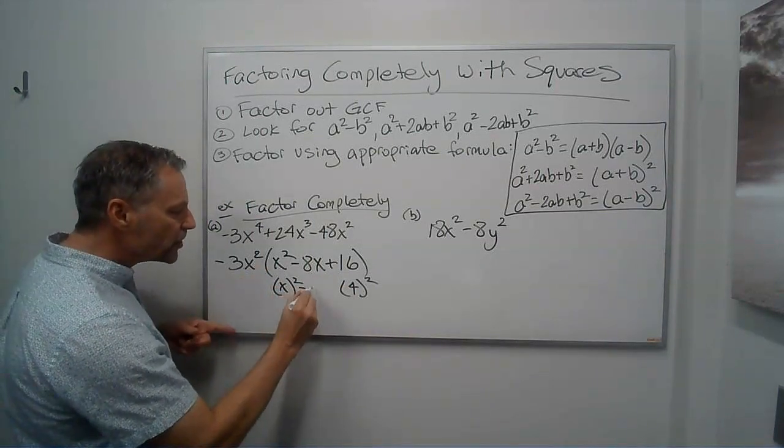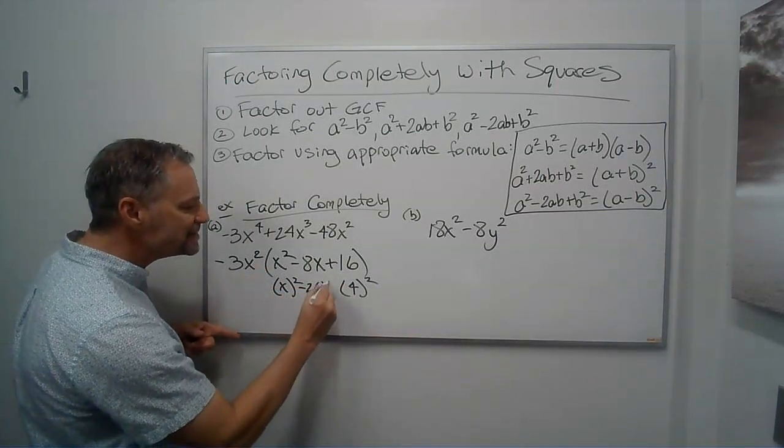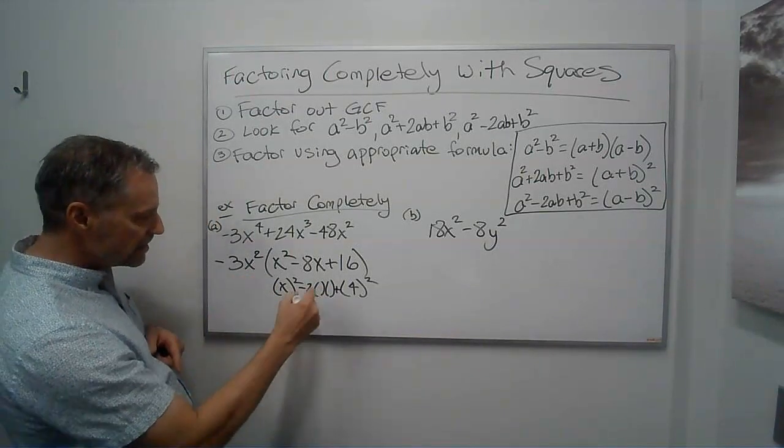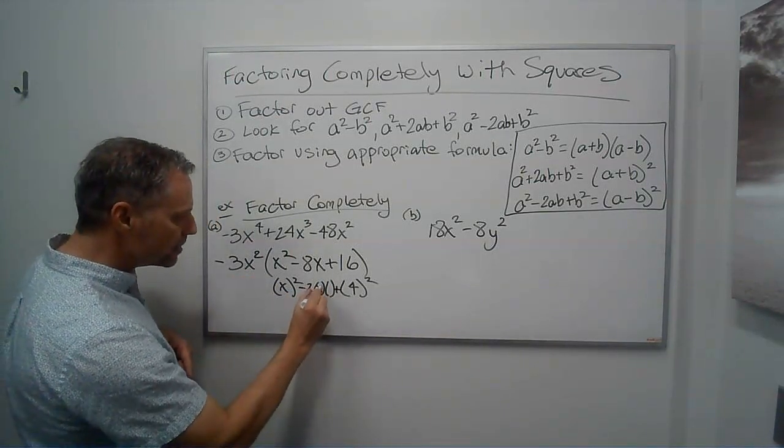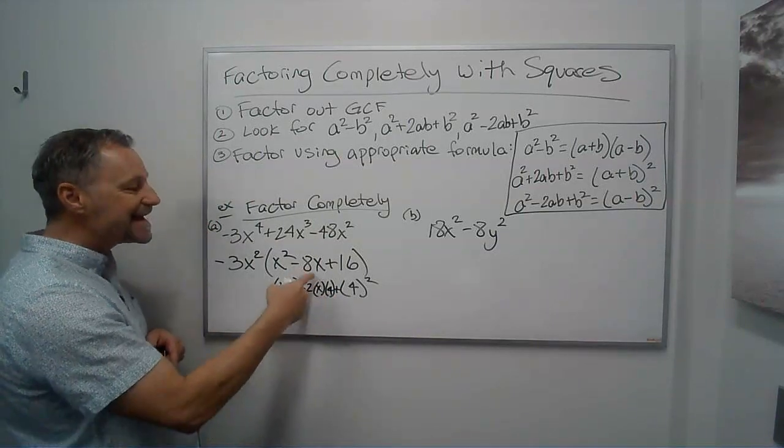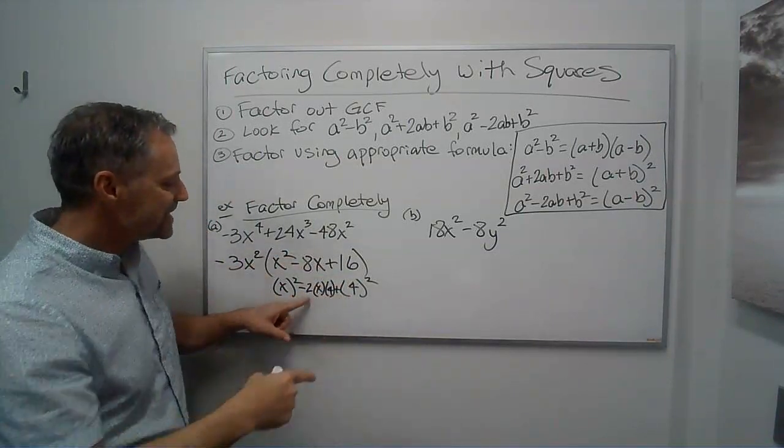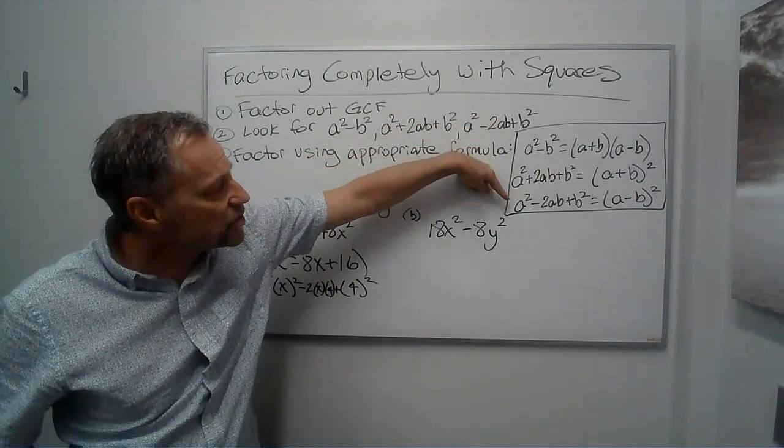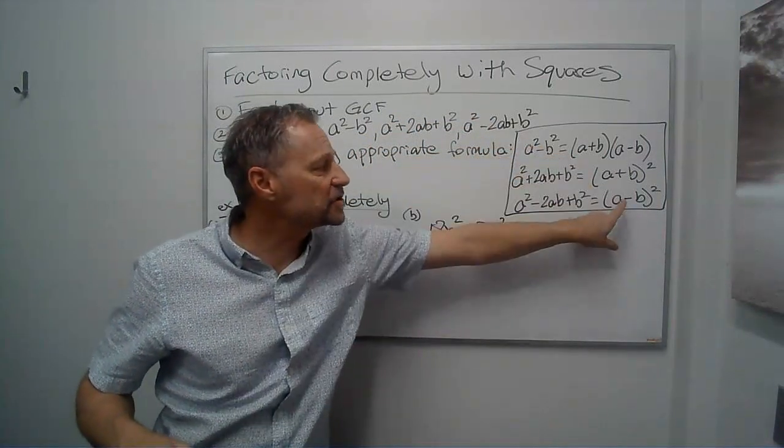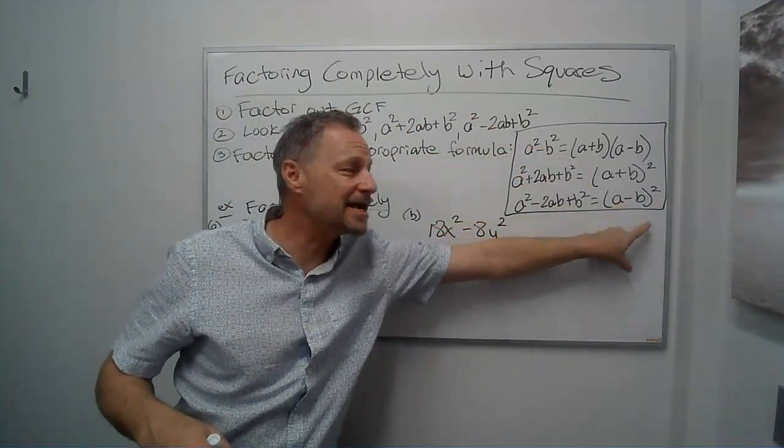So it works if this is 2 times each of those. And let's see, if I put in the x and the 4, I multiply that, I get 8x. Yes, it fits this pattern, a squared minus 2ab plus b squared. So it's just the first term minus the last term squared.